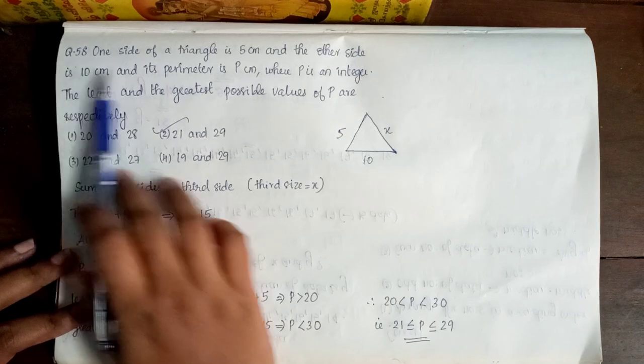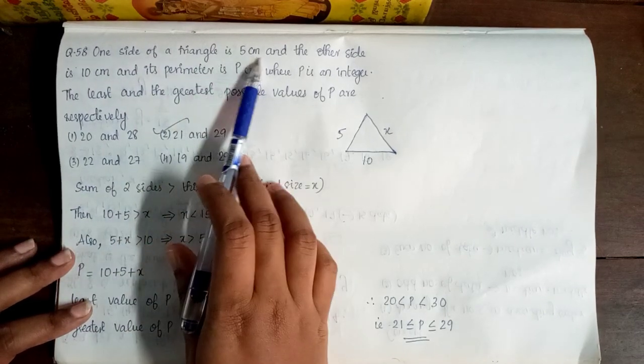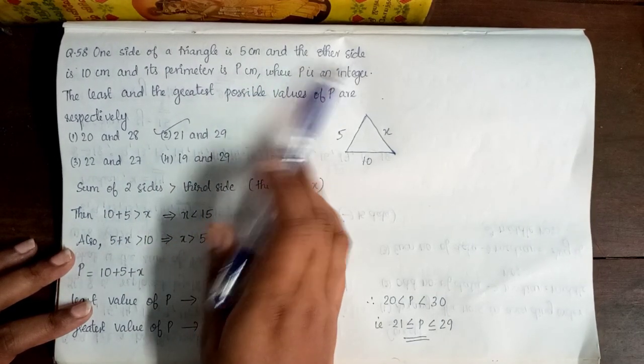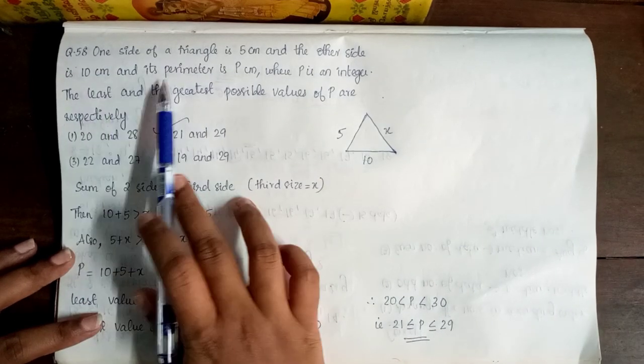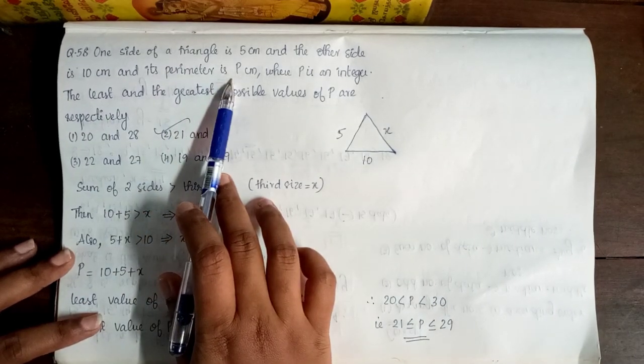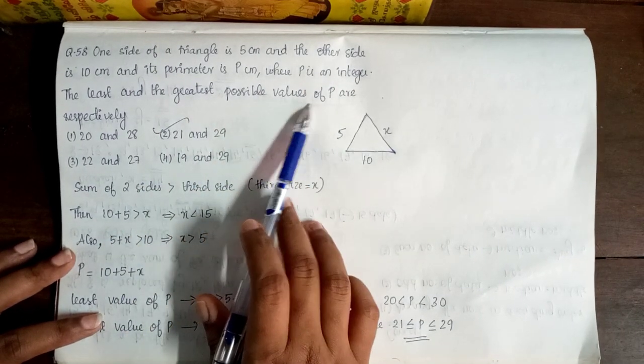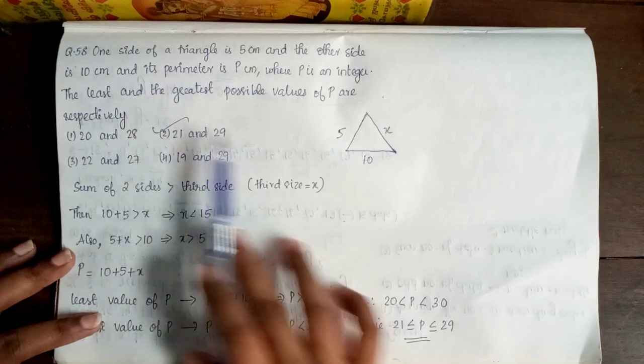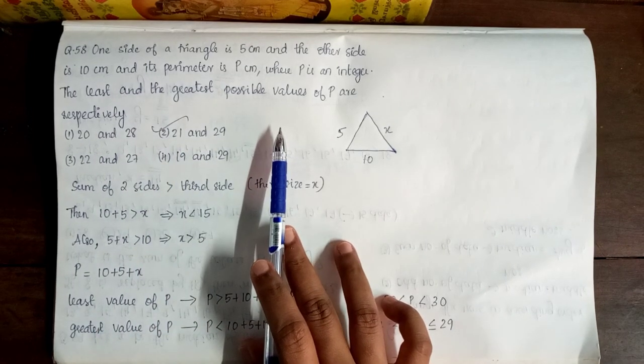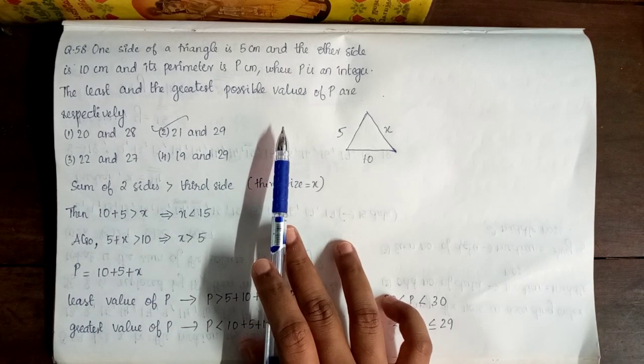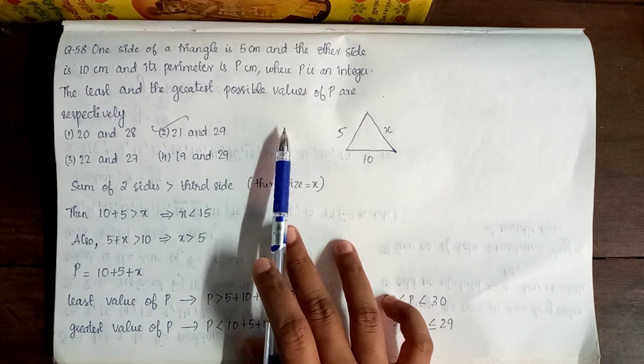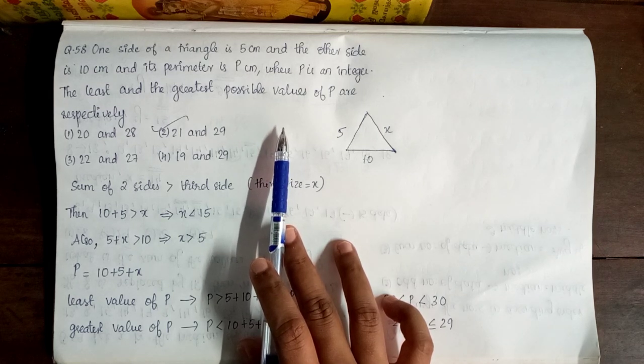Question 58. One side of a triangle is 5 cm and the other side is 10 cm and its perimeter is p cm where p is an integer, the least and the greatest possible values of p are respectively. You can see the length of two sides and the perimeter of p is an angle. That is the greatest and least value.